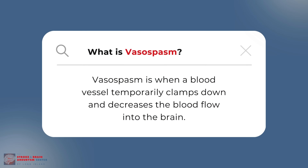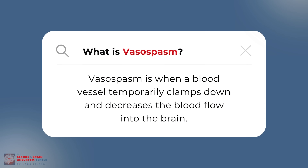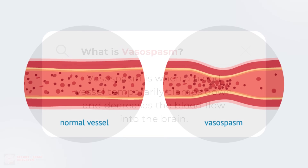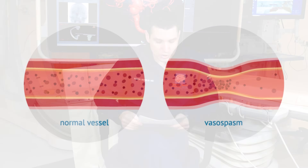In the setting of brain aneurysms, we also talk about vasospasm. Vasospasm is when a blood vessel temporarily clamps down and decreases blood flow into the brain. It's temporary and can be treated with medications or other interventions.